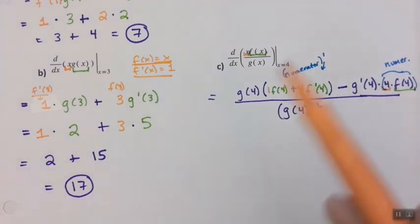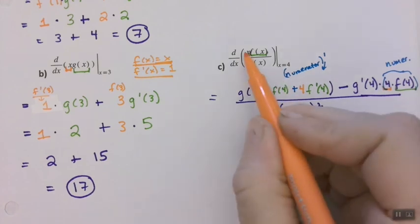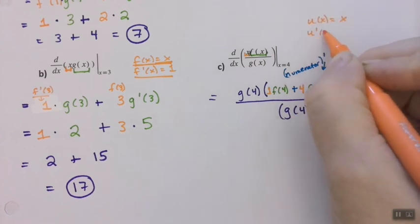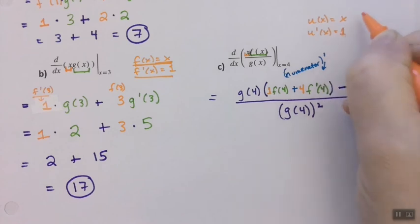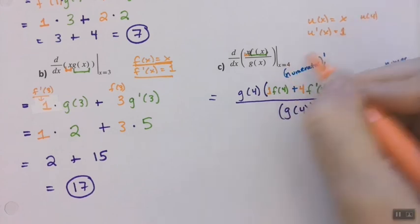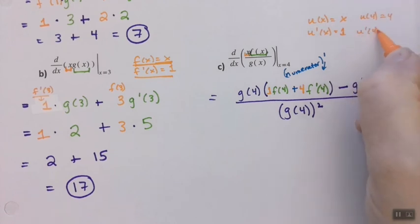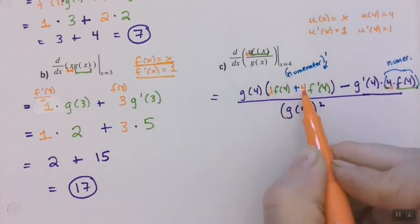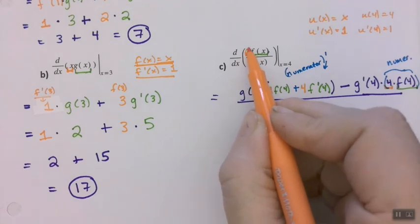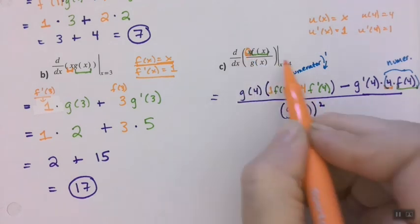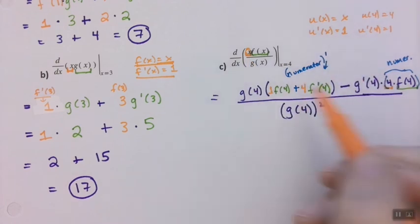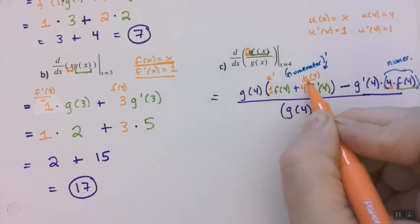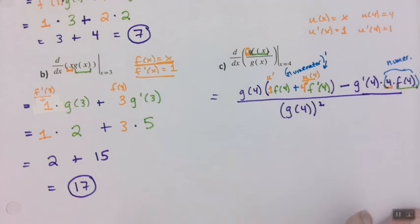The tricky part: this is x prime. If u of x equals x, then u prime of x equals 1. And u of 4 is 4; u prime of 4 is still 1 — it's constant. So this is u prime at 4, and this is u of 4. I'm taking this x function, sticking 4 into it to get 4, and taking its derivative, which is 1.